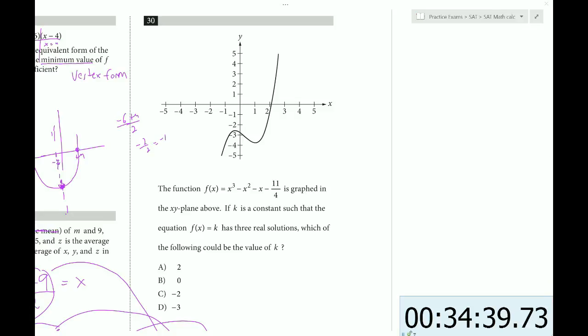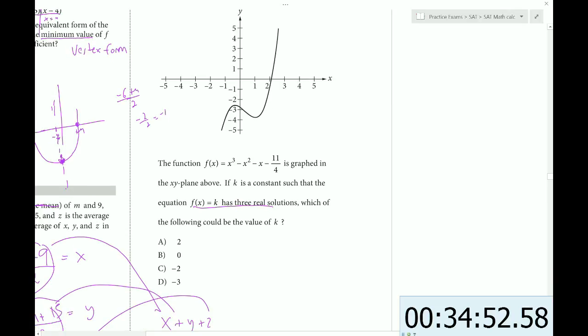Okay, question 30. The function f(x) = x³ - x² - x - 11/4 is graphed in the plane above. If k is a constant such that the equation f(x) = k has three real solutions, which of the following could be the value of k?